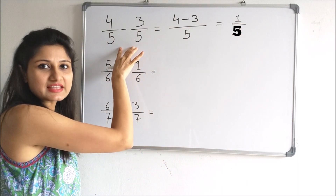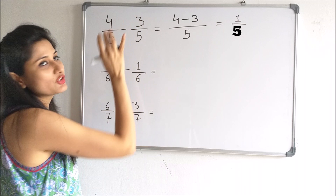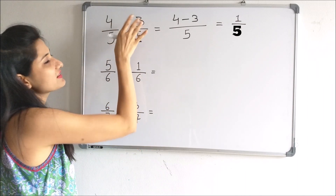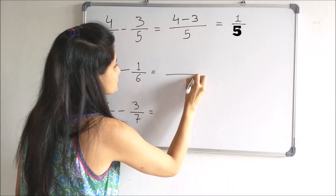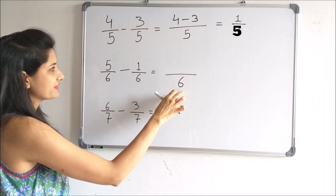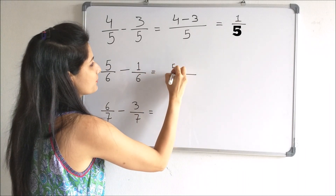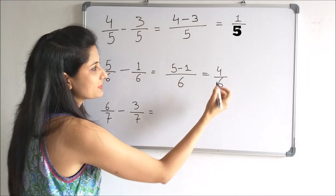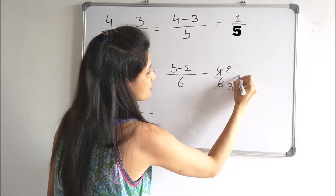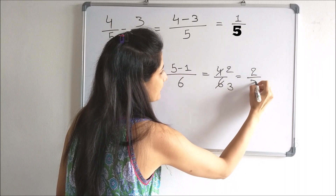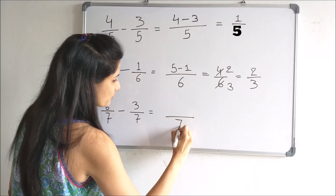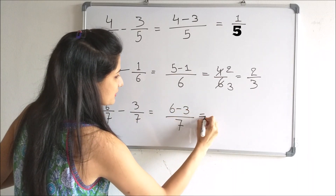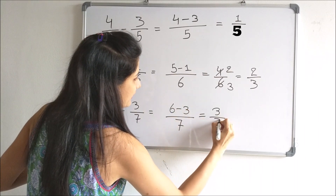When we add two fractions with the same denominators, we add the numerators. And when we subtract two fractions with the same denominator, we subtract the numerators. Here also, we will write the denominator as it is and subtract the numerators, which gives us 4 by 6. Since 4 by 6 can be simplified further, we divide by 2 which gives us 2 by 3. Here also, we write the denominator as it is and subtract the numerators: 6 minus 3, which gives us 3 by 7.